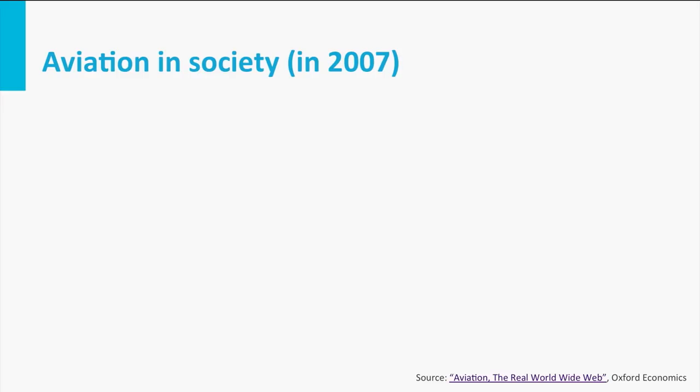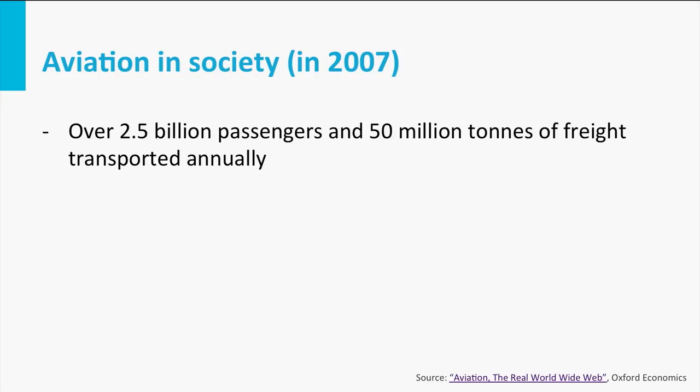For instance, there are 7 billion people on the earth. How many do you think would fly annually? If you fly twice, we count you twice. The number is quite astonishing: compared with 7 billion people on the earth, 2.5 billion fly annually. And 50 million tons of freight is also transported through the air annually, often in the same aircraft.